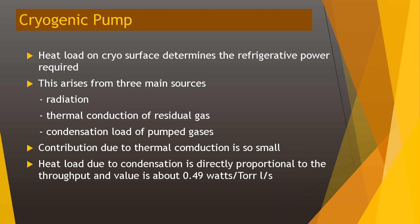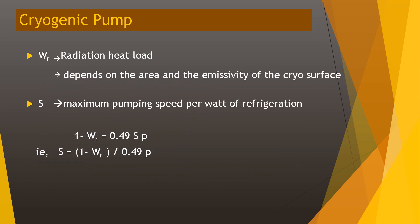The heat load on the cryo surface determines the refrigerative power required. This arises from three main sources: radiation, thermal conduction of residual gases, and the condensation load of pumped gases. The contribution due to thermal conduction is very small. Heat load due to condensation is directly proportional to throughput, with a value of about 0.49 watts per Torr·litre per second. W_R represents the radiation heat load, which depends on the area and emissivity of the cryo surface. S represents the maximum pumping speed per watt of refrigeration.